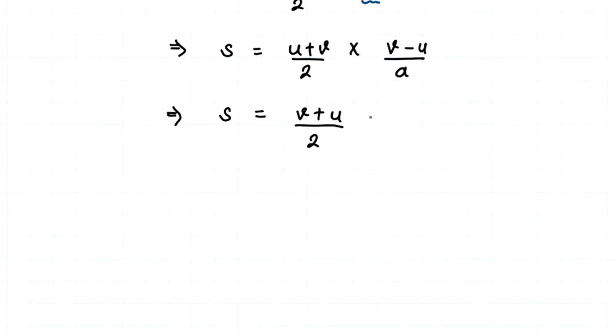We have s equals, we can write this u plus v as v plus u divided by 2 times v minus u divided by a. Now we have s equals v plus u and v minus u, which is in the form of a plus b and a minus b.